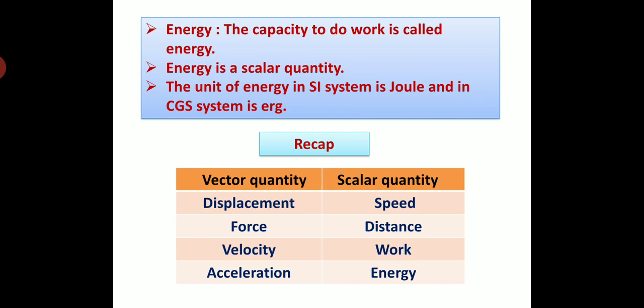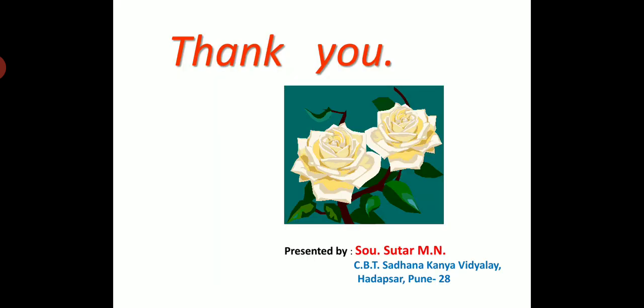Recap: The vector quantities and scalar quantities seen in this chapter are — Vector quantities: displacement, force, velocity and acceleration. Scalar quantities: speed, distance, work and energy. Thank you.